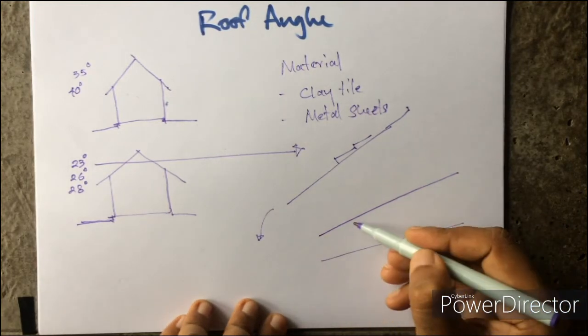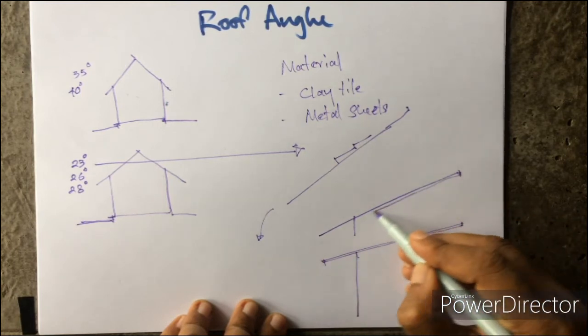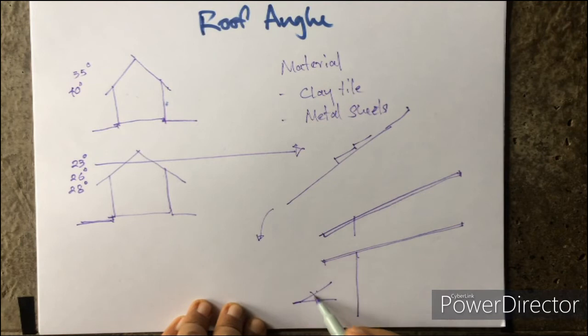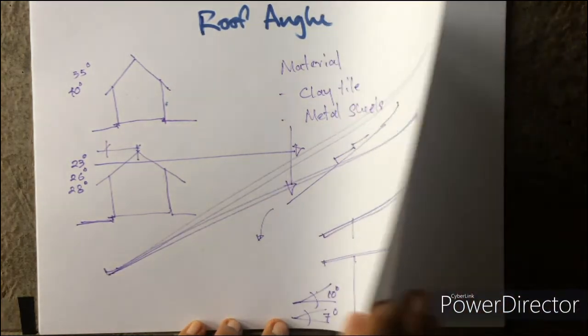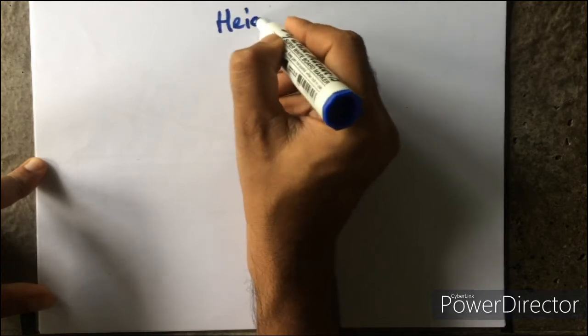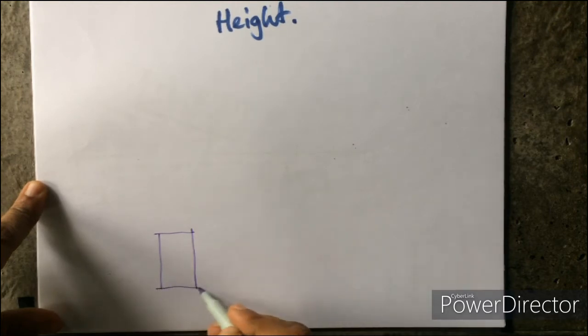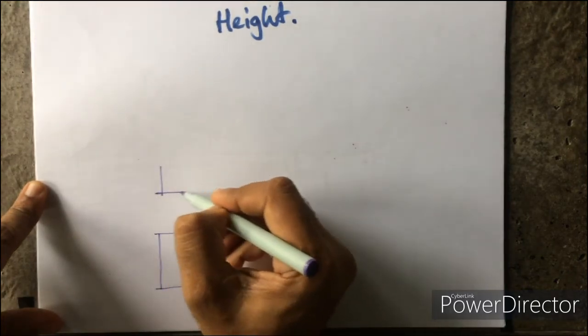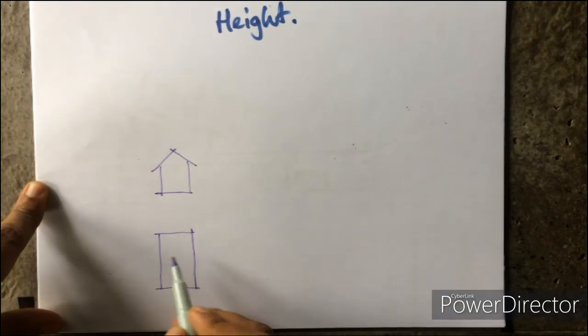If you have a metal sheet, it can be slightly less, you know. The angle could be about 10 degrees or sometimes even 7 degrees. So it's about the roofing angle.